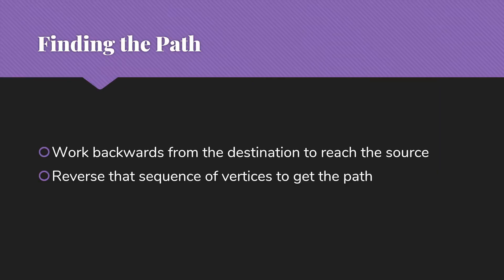One question is: how do we get to the actual path? We have the information we need in the path array, but we don't have a path that's human-friendly or even algorithm-friendly. So what we do is use our path array and work backwards from the destination to reach the source. That gives us a sequence of vertices that is the backward version of the path, and then we simply reverse that to get the forward version.